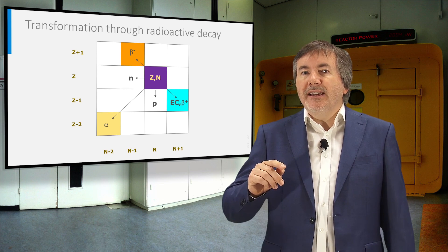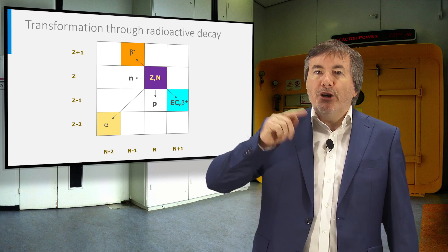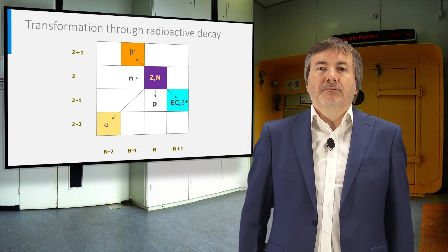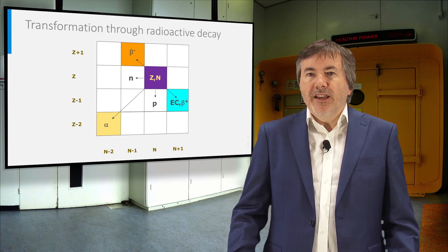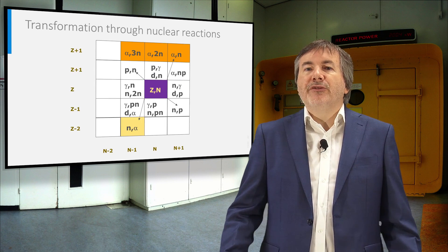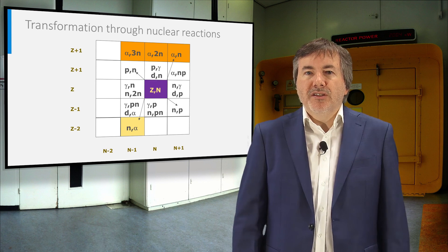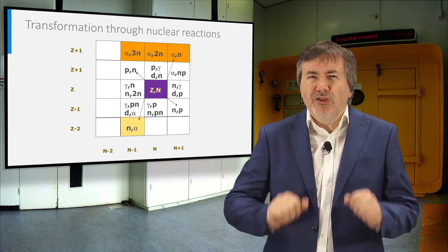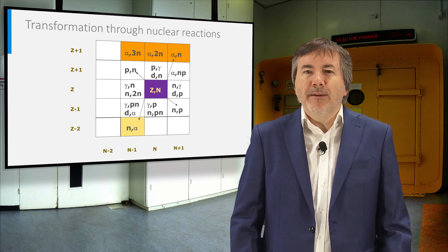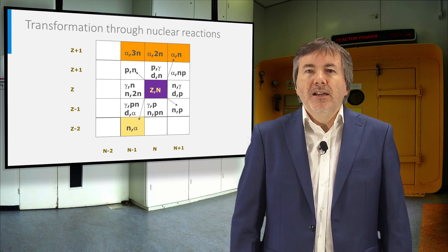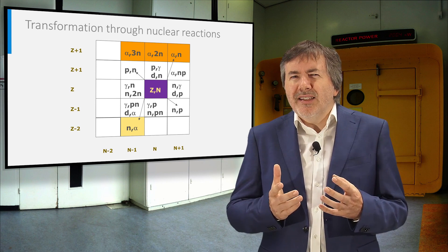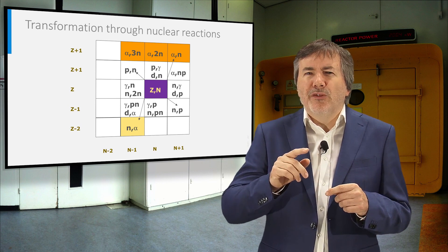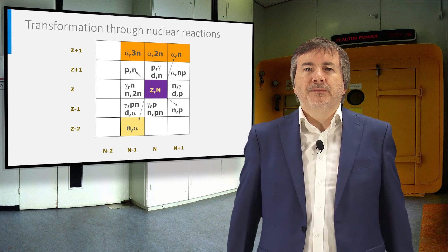For example, beta minus decay corresponds to a jump from the purple square to the orange. The same is done for nuclear reactions. This is handy for deciding how to produce a nuclide in the laboratory, but also to understand how nuclides are transformed in reactors or stars.